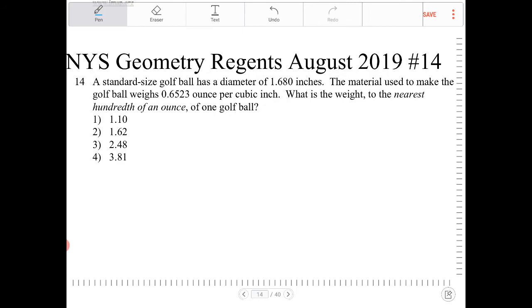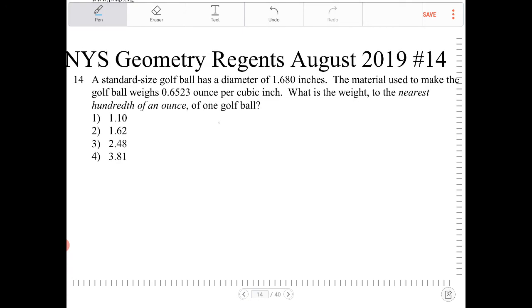So if we're using a sphere to model the situation, we need to find the volume of the sphere or of the ball, and we're going to use the volume of sphere formula to do that, and that would be four-thirds pi r cubed.